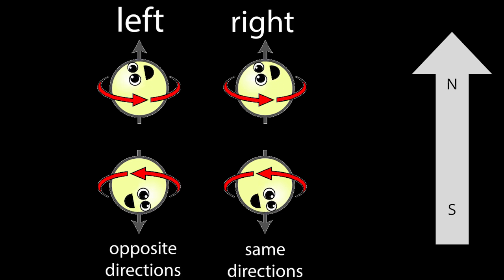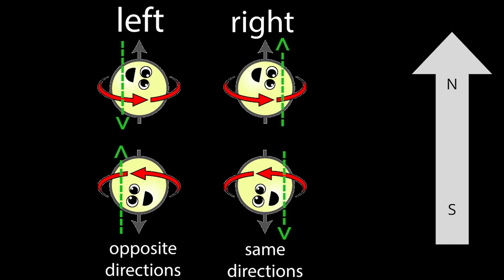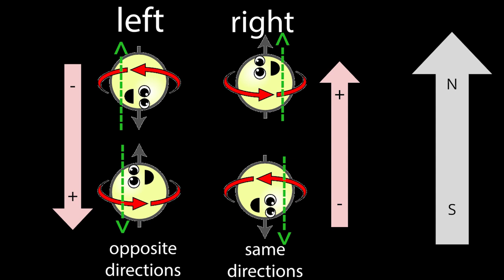Then, since right-handed or left-handed particles require their momenta and spin to be in a certain configuration, they will align or anti-align their momenta with their spin. This causes electric charges to separate and create an electric current.